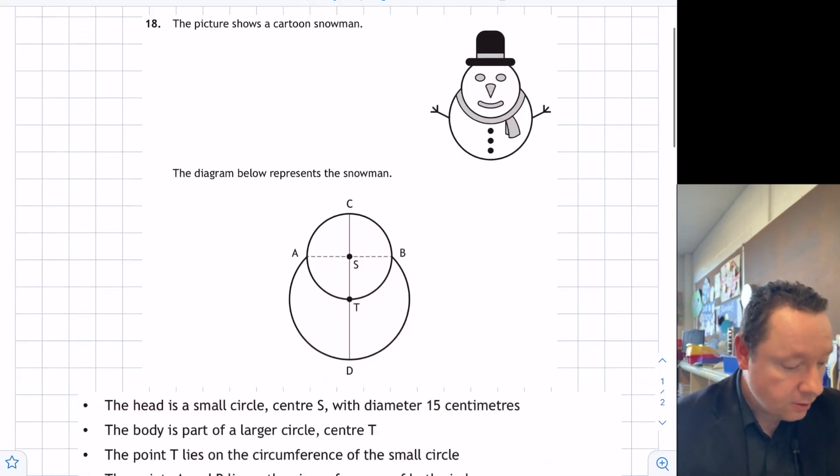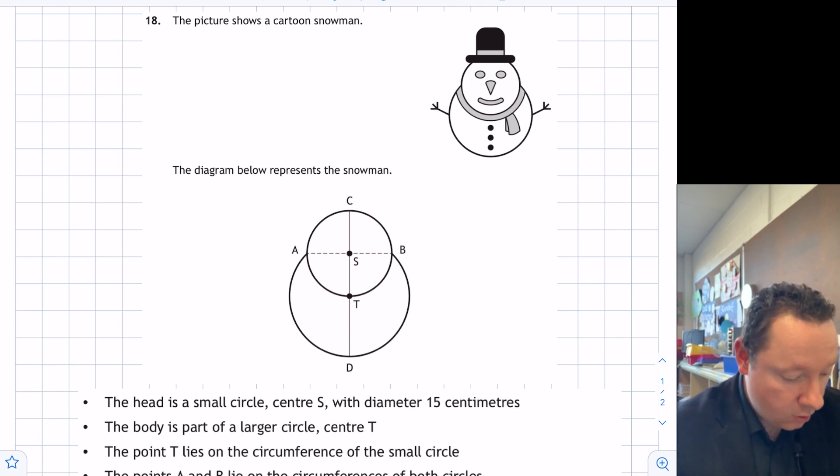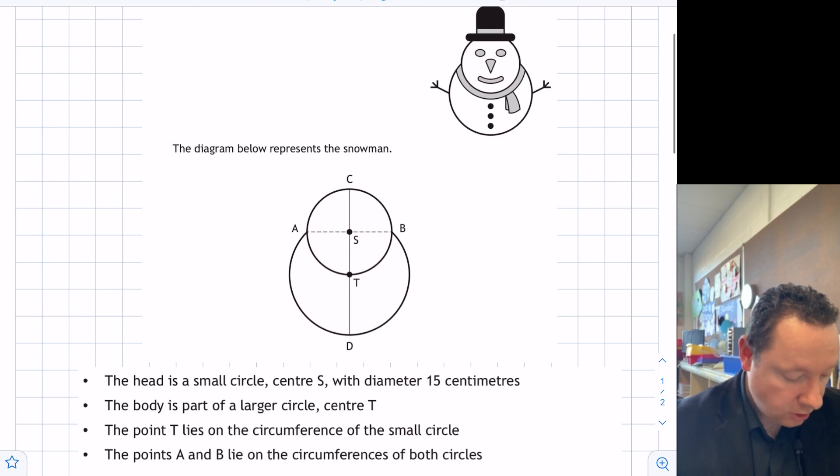It says, here's a picture of a cartoon snowman and the diagram below represents the snowman. It tells you some information such as the head is a small circle with diameter of 15 centimeters.